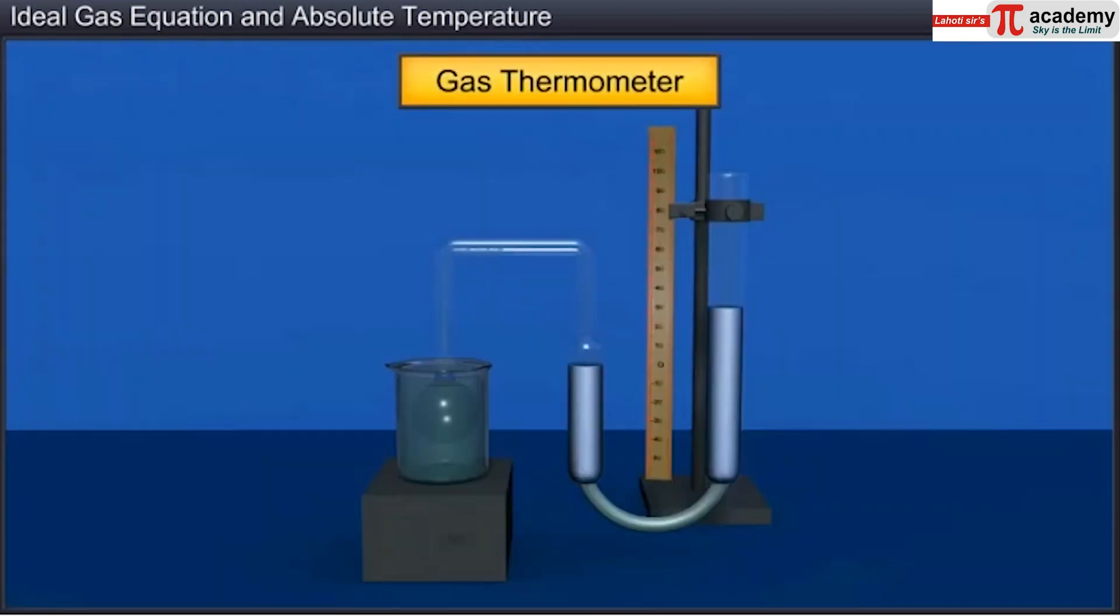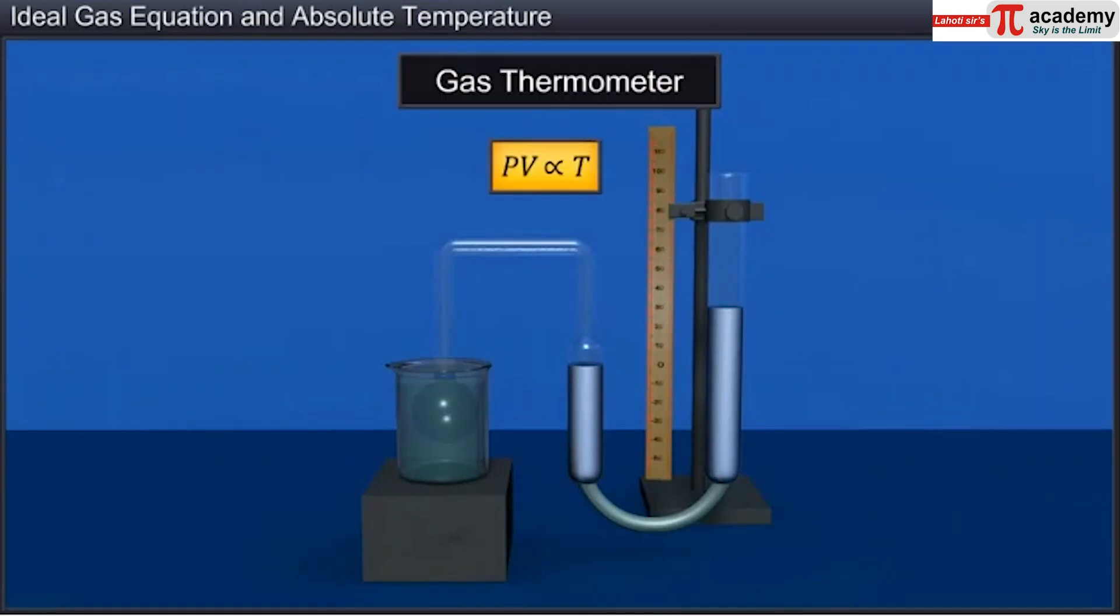The constant volume gas thermometer works on the principle of the ideal gas law. Since PV is directly proportional to T, when the volume of a given sample of gas is constant, its pressure changes linearly with the temperature of the gas.